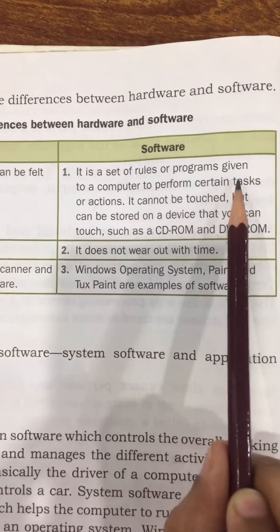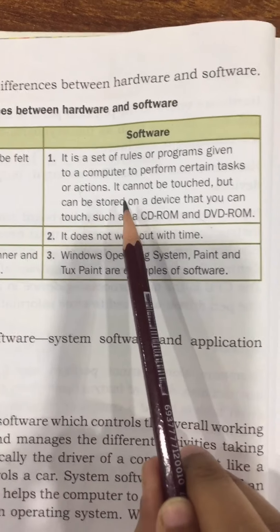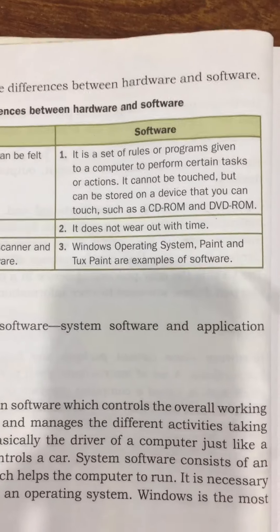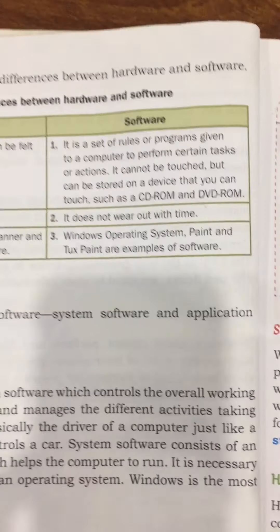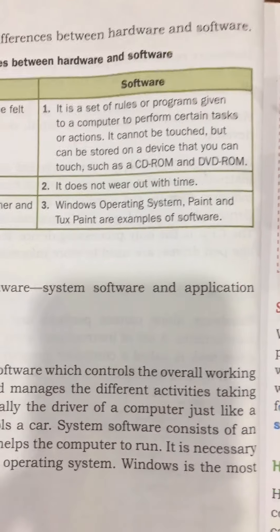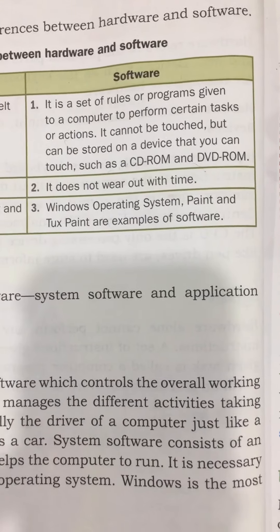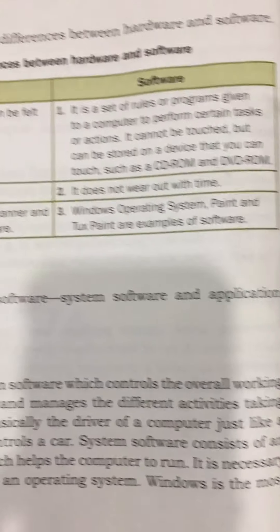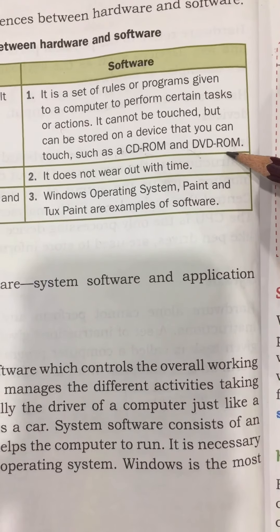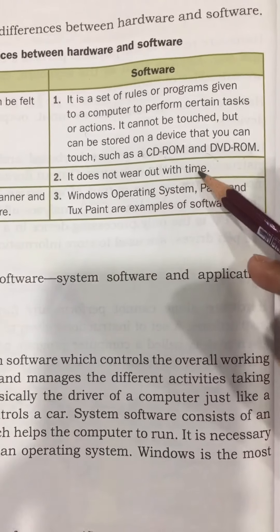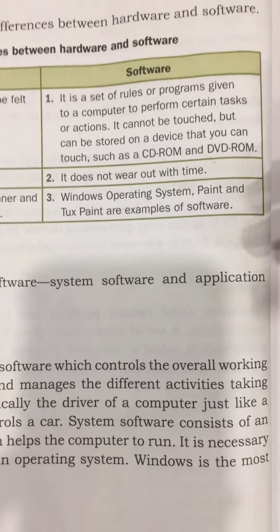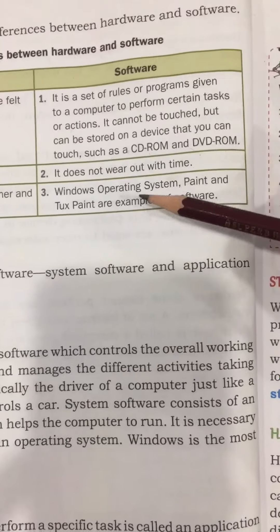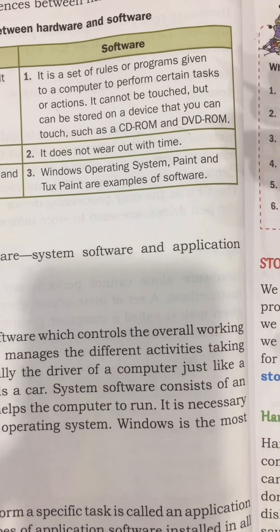What is software? It is a set of rules or programs given to a computer to perform certain tasks or actions. It cannot be touched but can be stored on a device that you can touch, such as a CD-ROM or DVD-ROM. Software has to run inside the computer. It does not wear out with time.